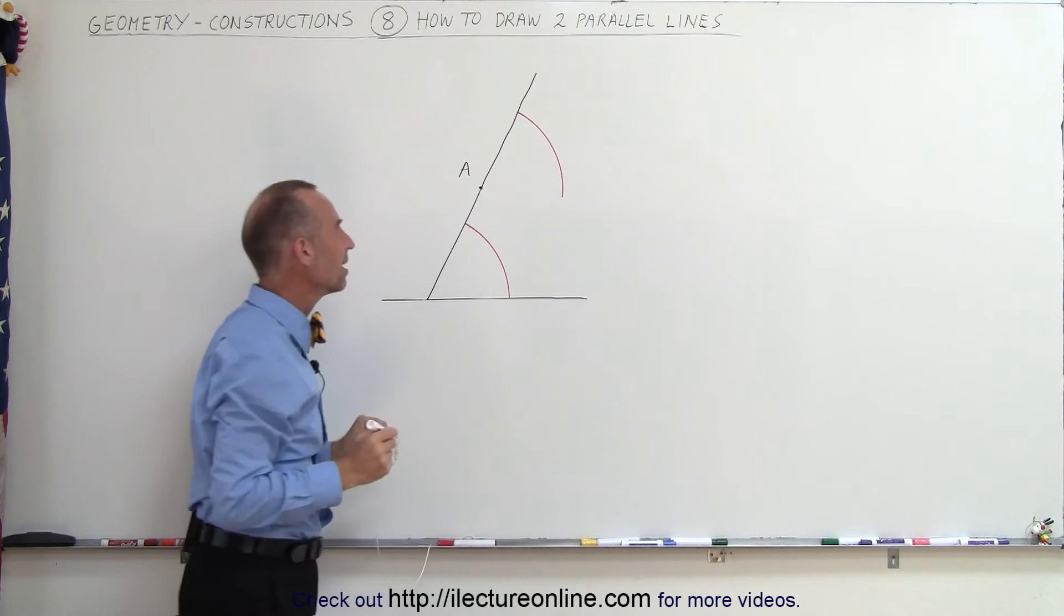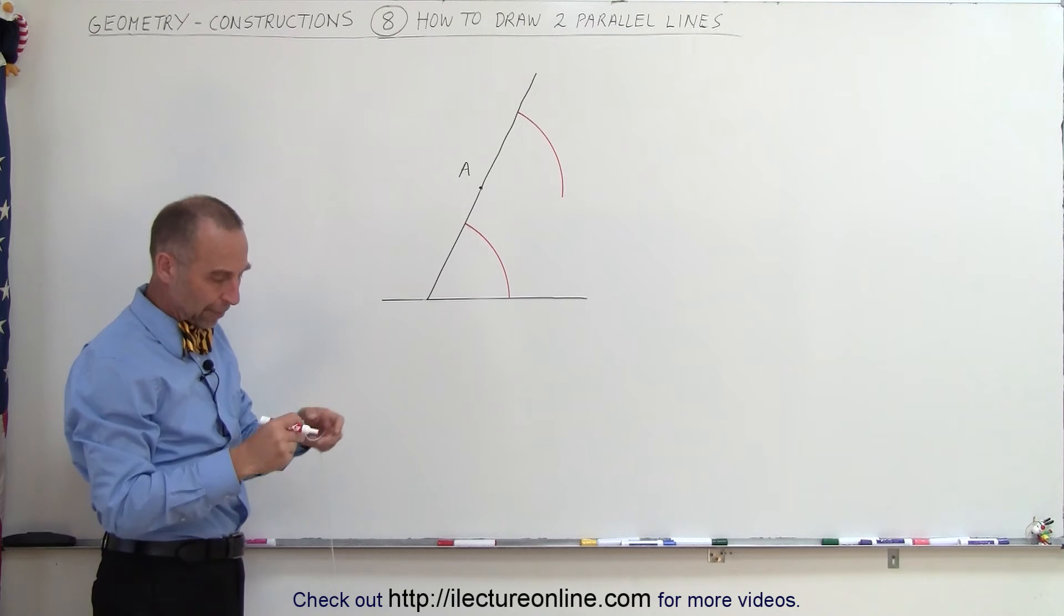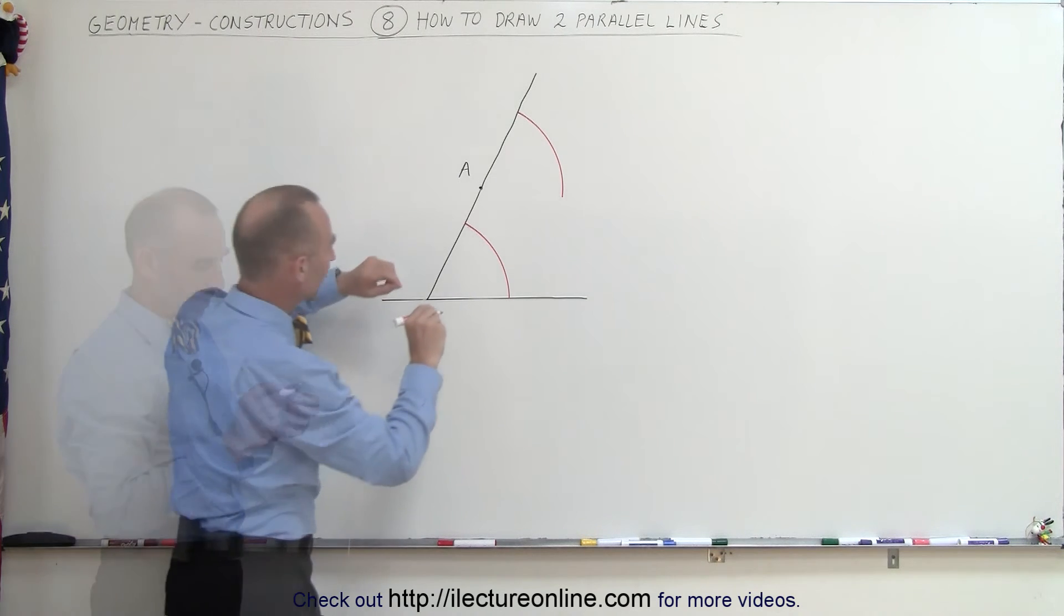We draw a little bit past the parallel line where we think we're going to have a parallel line. Then we grab the compass again. So now we come up here.